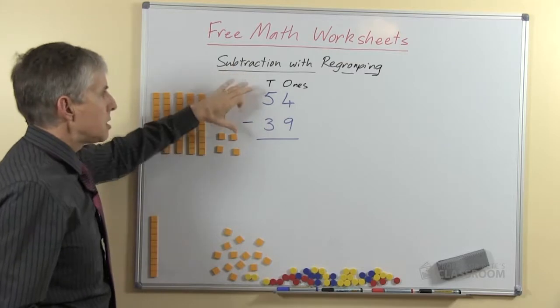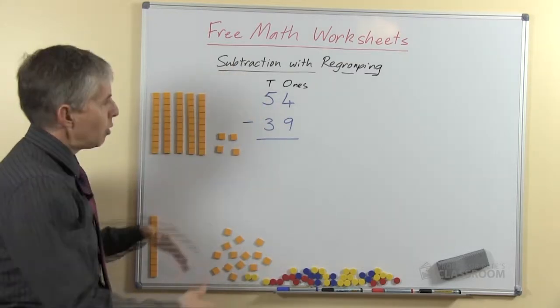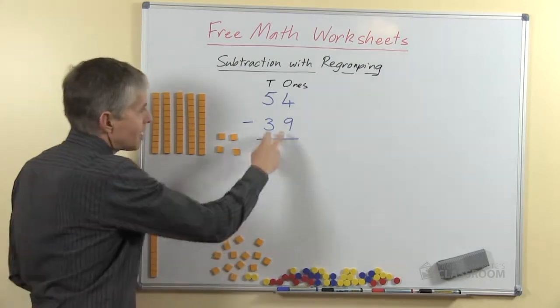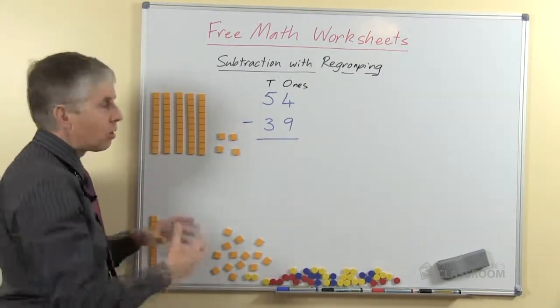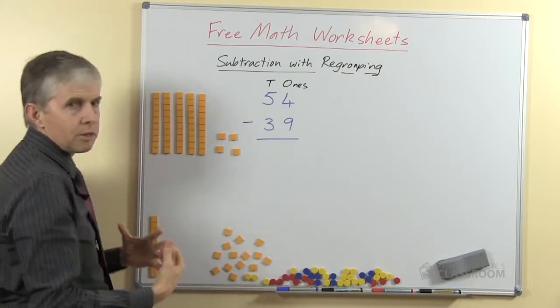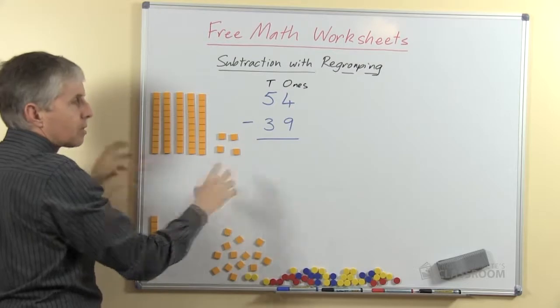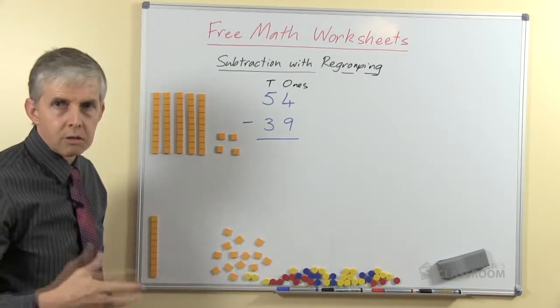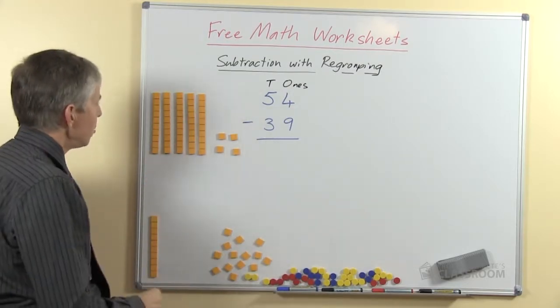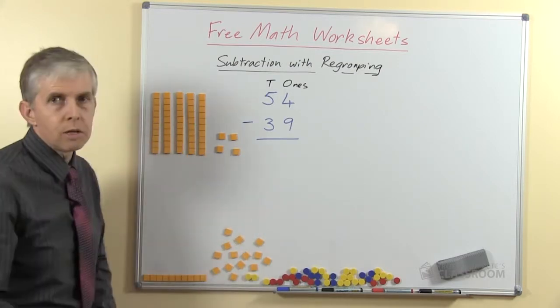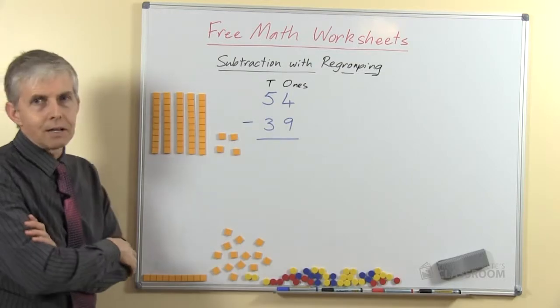Now notice that when we're doing subtraction we don't put out the second number as well, because this number we're going to be taking away from the 54. So from here we'll take away 39. If we're doing addition we would put both sets of numbers and then add them all together. Alright, so 54 take away 39, where are we going to start?